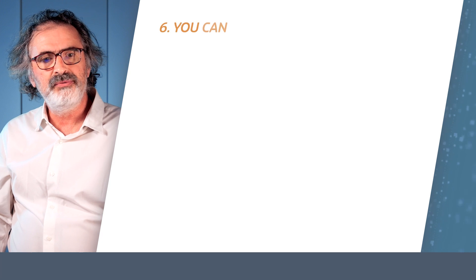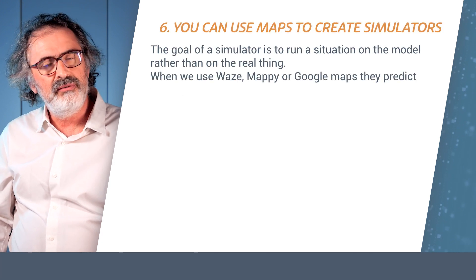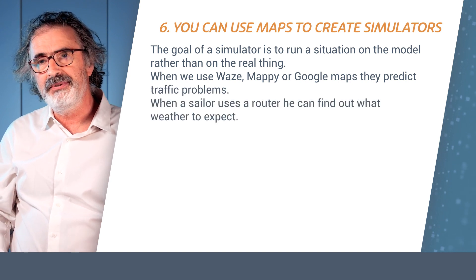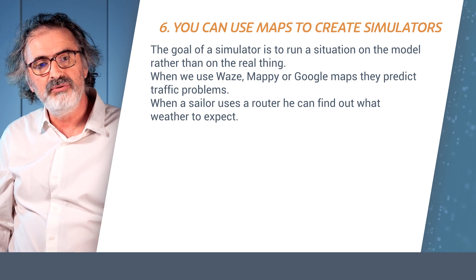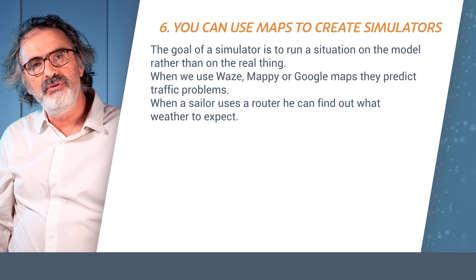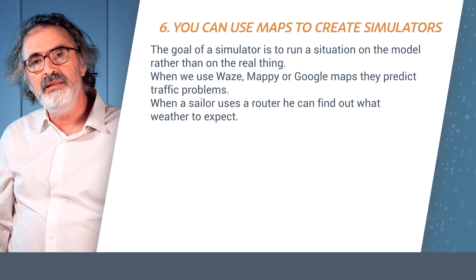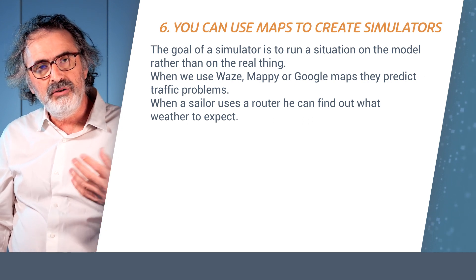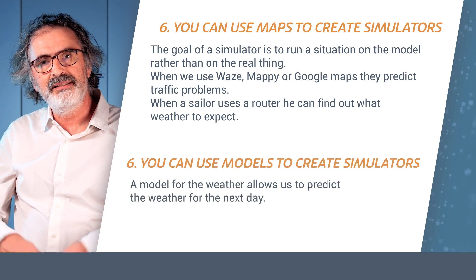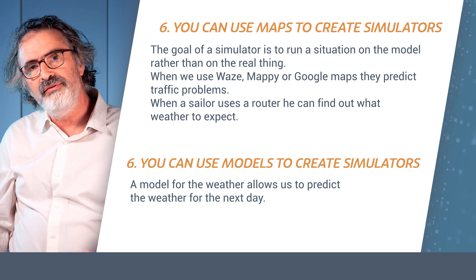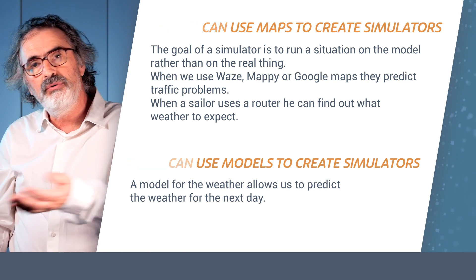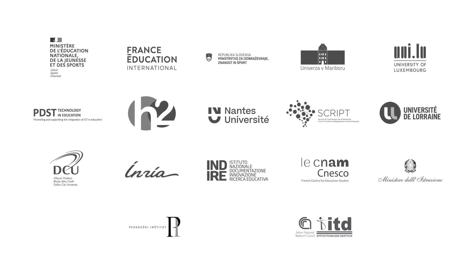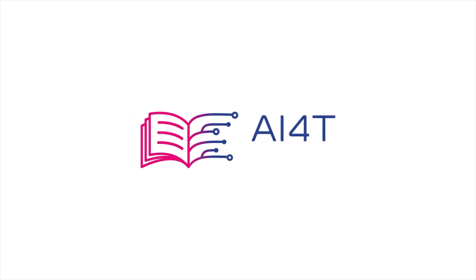One of the things you can use maps for is to create simulators. Nowadays we all have navigation systems in our cars, which are maps simulating traffic and allowing us to know how long it will take to get from one place to another. The same works for a sailor — you can use the map to account for wind conditions and find the best route. You can use models in the same way to build simulators, and the typical example is a weather forecast: you run your model to predict the weather in the next few hours and know whether you need an umbrella or not.